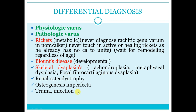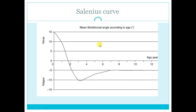Focal fibrocartilaginous dysplasia and others. This is the Salenius curve — this is the line for the age and this is the line for the deformity. This is the varus side and this is the valgus side. Newborn starts with maximum varus, then rectus, then maximum valgus at 3 years, then returns to physiological valgus of 7 degrees at about 7 years.